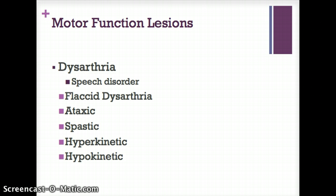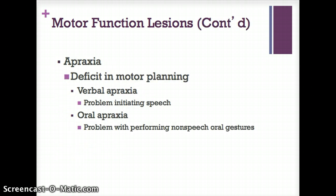When thinking about dysarthria, you're thinking about muscle weakness and paralysis. There are several different types: flaccid dysarthria, ataxic, spastic, hyperkinetic, and hypokinetic. You don't need to know each one — just know there are several types of dysarthria, because you will take an entire class in graduate school on all of the dysarthrias.